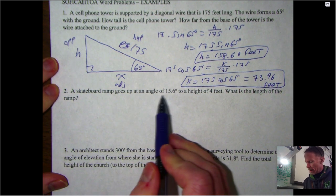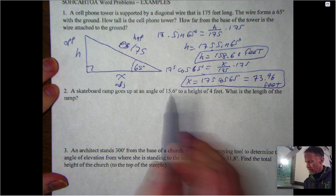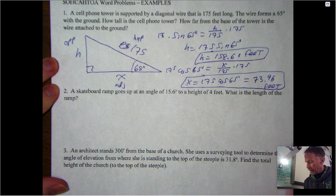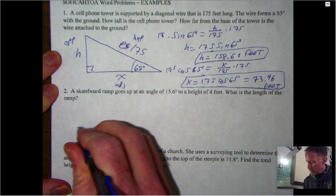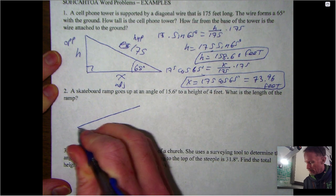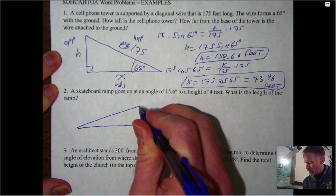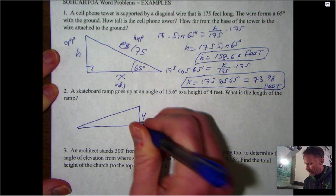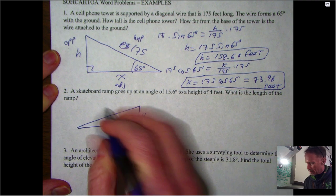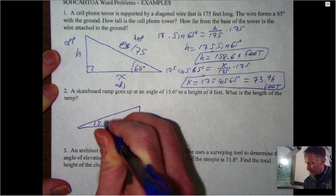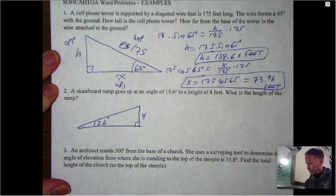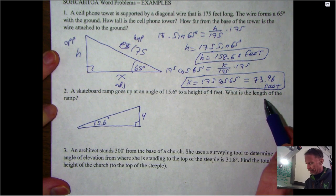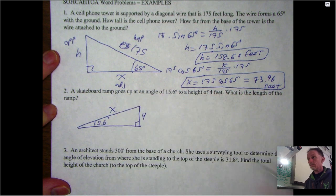So if I'm doing this: skateboard ramp goes up at an angle of 15.6 degrees to a height of four feet. What's the length? There's my ramp, there's the ground. I know it goes to a total height of four feet, angle right there, and I know it goes up at an angle of 15.6 degrees.